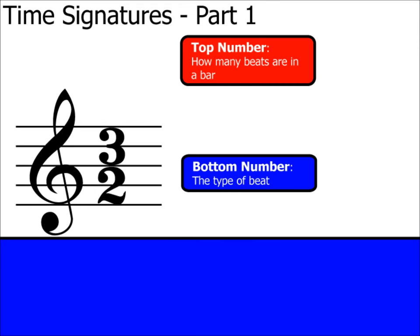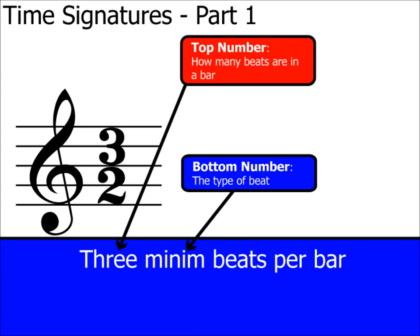This time signature, which has a two at the bottom, well, that represents a minim, as two minims, each worth two, fit into a semibreve which has a value of four. So the full explanation of this time signature is three minim beats per bar.